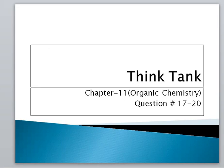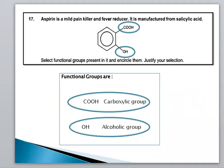Question 17: Aspirin is a mild painkiller and fever reducer. It is manufactured from salicylic acid. There is a benzene ring and two functional groups. Select a functional group present in it and answer them to justify your reason.